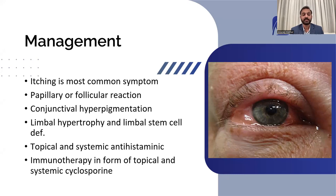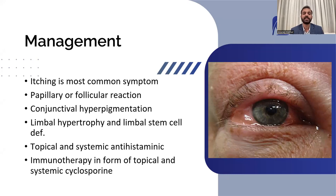In extreme cases like VKC and AKC, there can be limbal hypertrophy — at the limbus, which is the junction of conjunctiva and cornea, you see a hypertrophic mass. If it remains active for a very long time, it can lead to limbal stem cell deficiency, which is a very serious condition. AKC and VKC have a lot of implications for the final visual outcome, so we need to cure these patients very effectively and early in the course of disease.